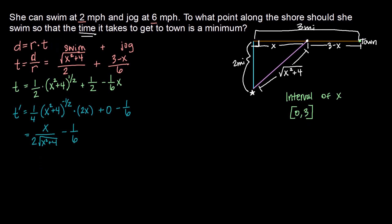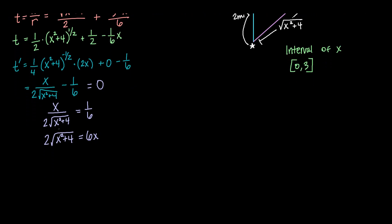All right, now that we've got our derivative, we want to set it equal to zero to find any critical points. Setting this equal to zero, I'm going to go ahead and move that one-sixth over. So x over two times the square root of x squared plus four now equals one-sixth. And then I'm going to go ahead and cross multiply. So two square root of x squared plus four times one just gives me two square root x squared plus four. And then x times six gives me six x. I'm going to go ahead and divide both sides by two. So that gives me square root of x squared plus four equals three x.